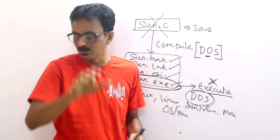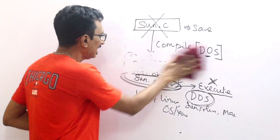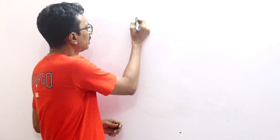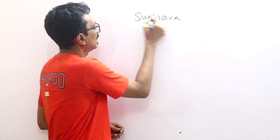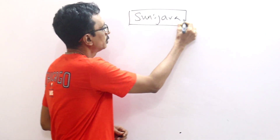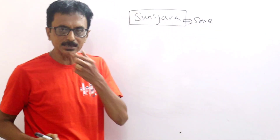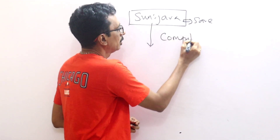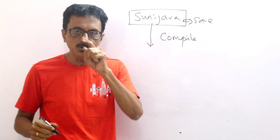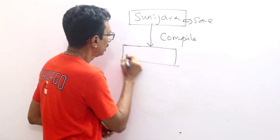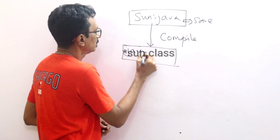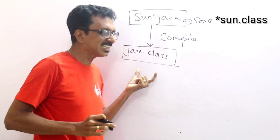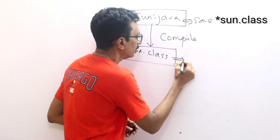This is C — platform dependent. If you call a platform independent language, Java creates a file. You save it, compile it, and only one file is created: a Java .class file. The class file is bytecode. This is bytecode.